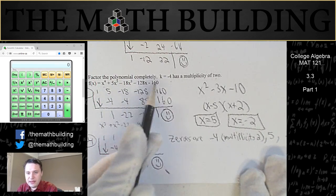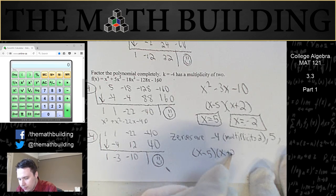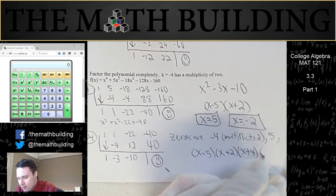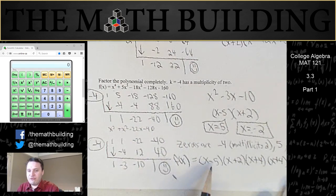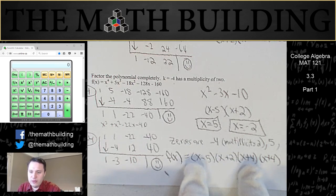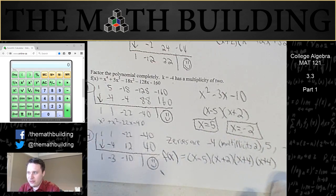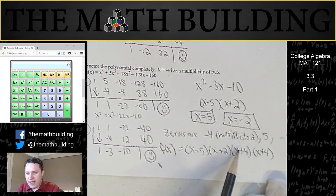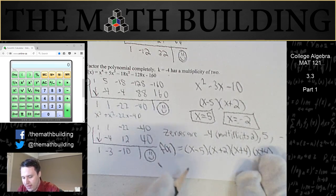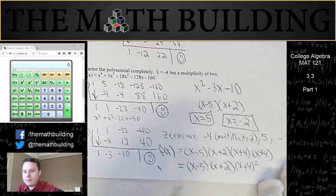Knowing these zeros, I can also completely factor this polynomial. It factors as (x minus 5)(x plus 2)(x plus 4)(x plus 4), which equals f of x. If you were to FOIL this entire thing, you would get the original polynomial. You could also write it as (x minus 5)(x plus 2)(x plus 4) squared, since we have two of them — that multiplicity of 2 corresponds to the two (x plus 4) factors.